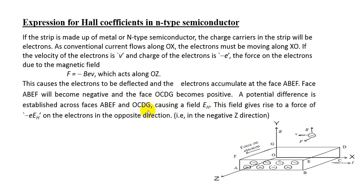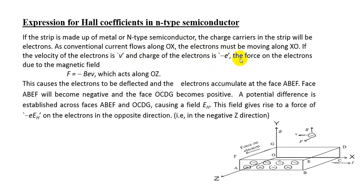Now, let us derive the Hall coefficient for n-type semiconductor. In your syllabus, you have Hall coefficients for p-type semiconductor also. If you know the Hall coefficient for n-type semiconductor, then p-type semiconductor is easy — just the sign changes there. Because the charge of the electron here is minus e for n-type, and the charge of the holes in p-type is plus e.